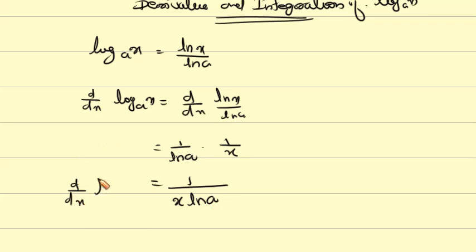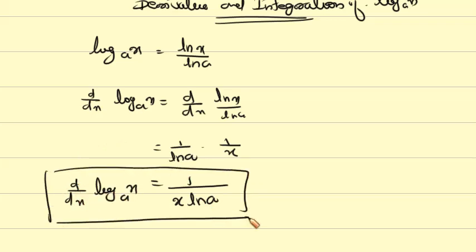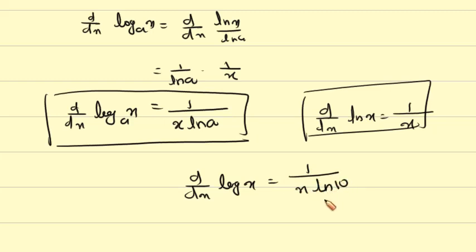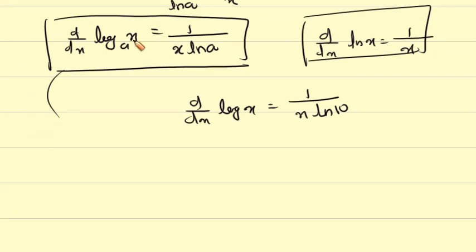Therefore d/dx of log x to the base a equals 1 divided by x·ln a. We know d/dx of ln x equals 1/x. So d/dx of log x to the base a equals 1 over x·ln a.